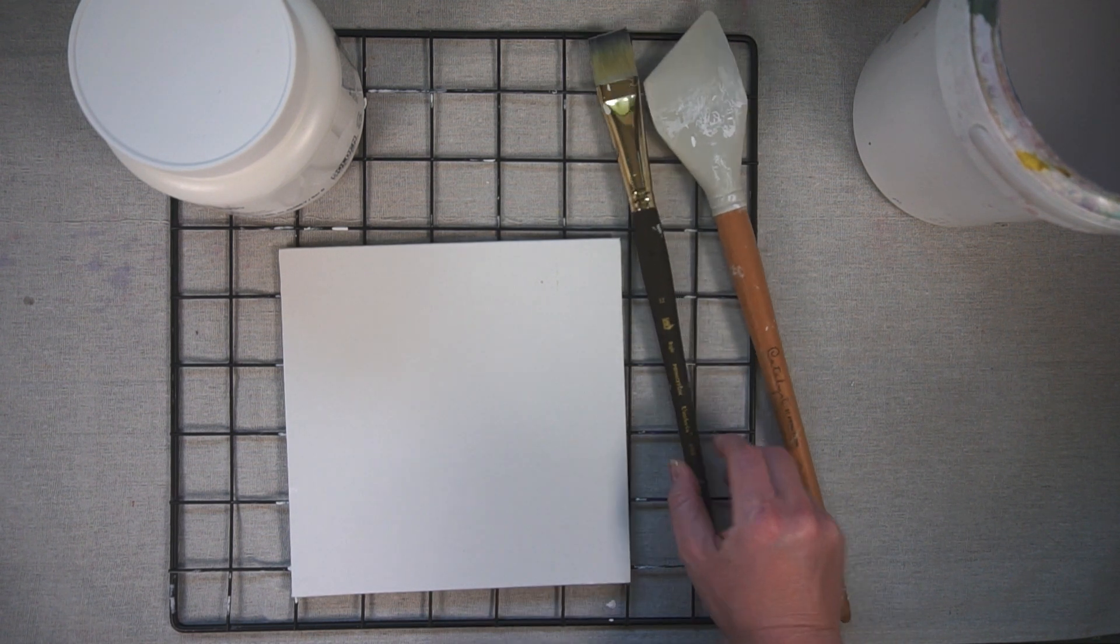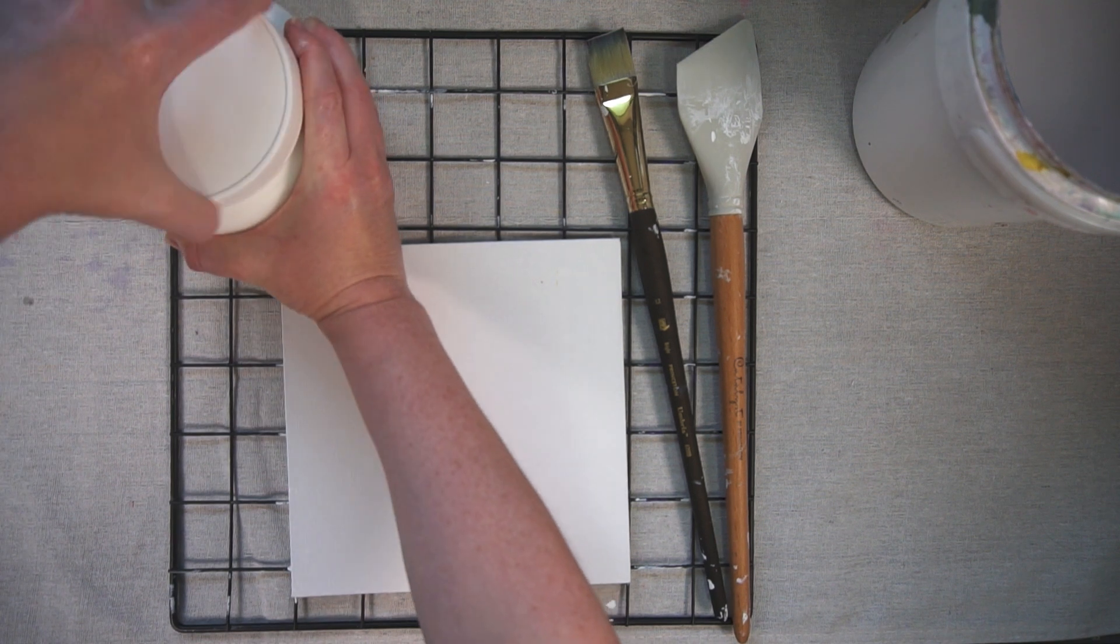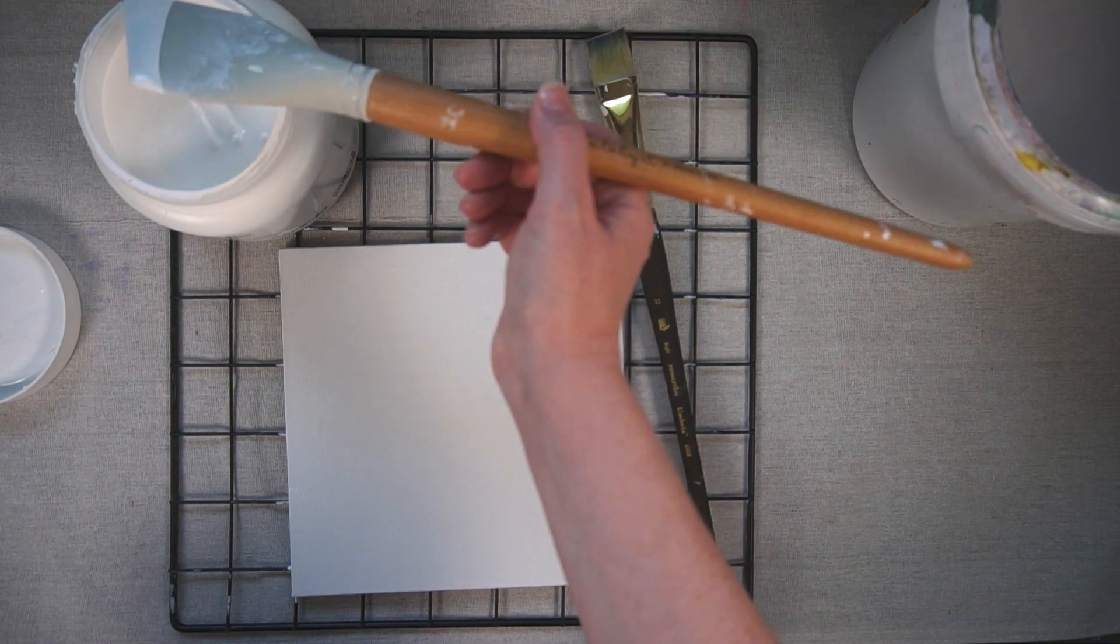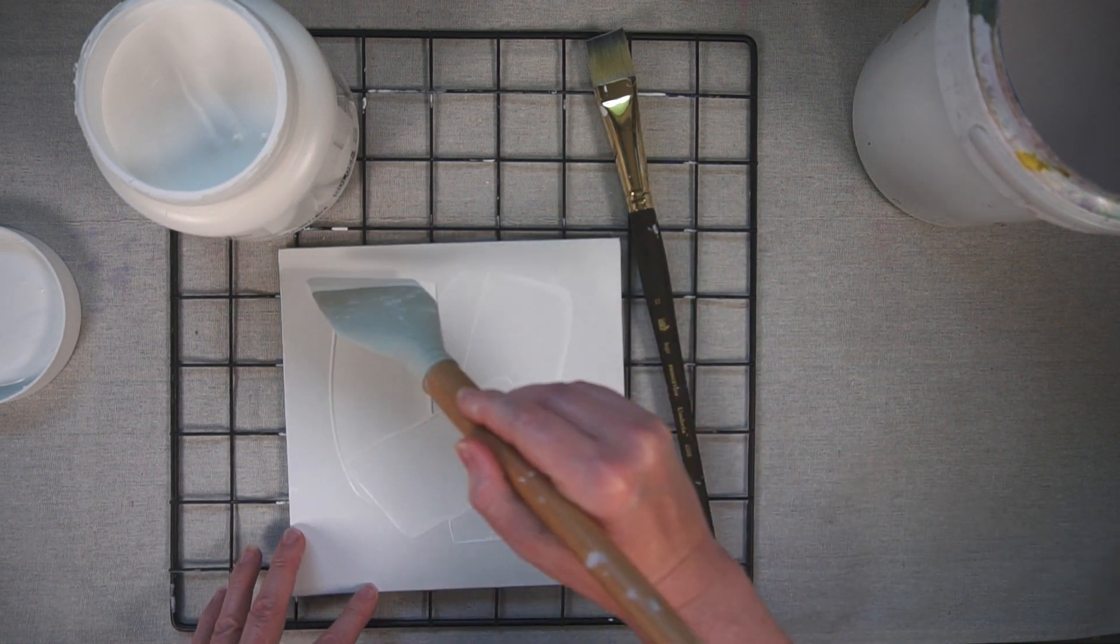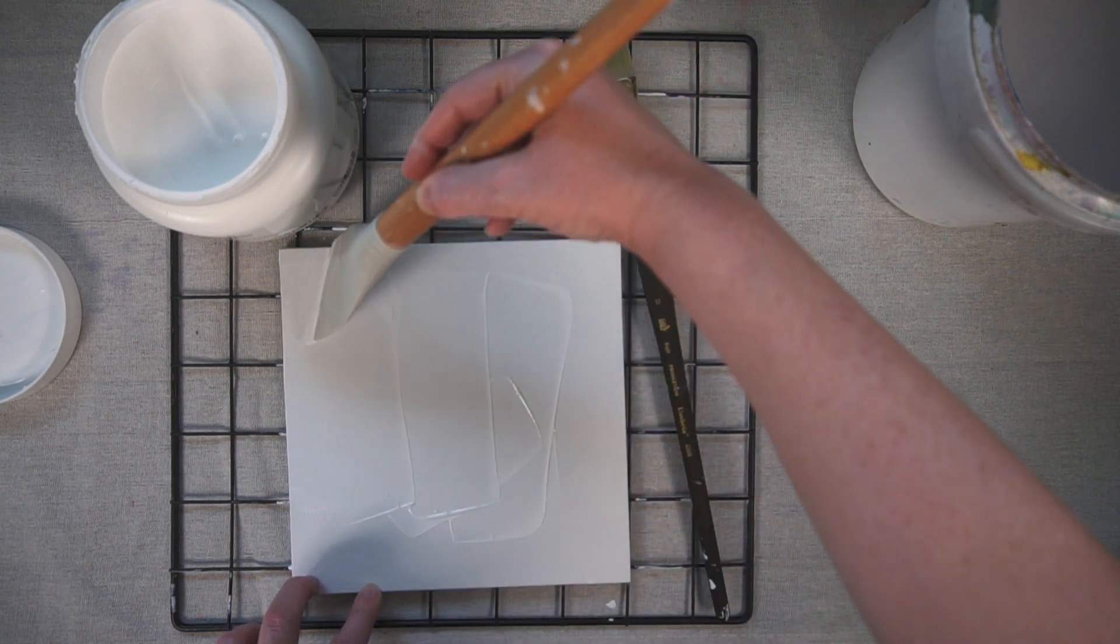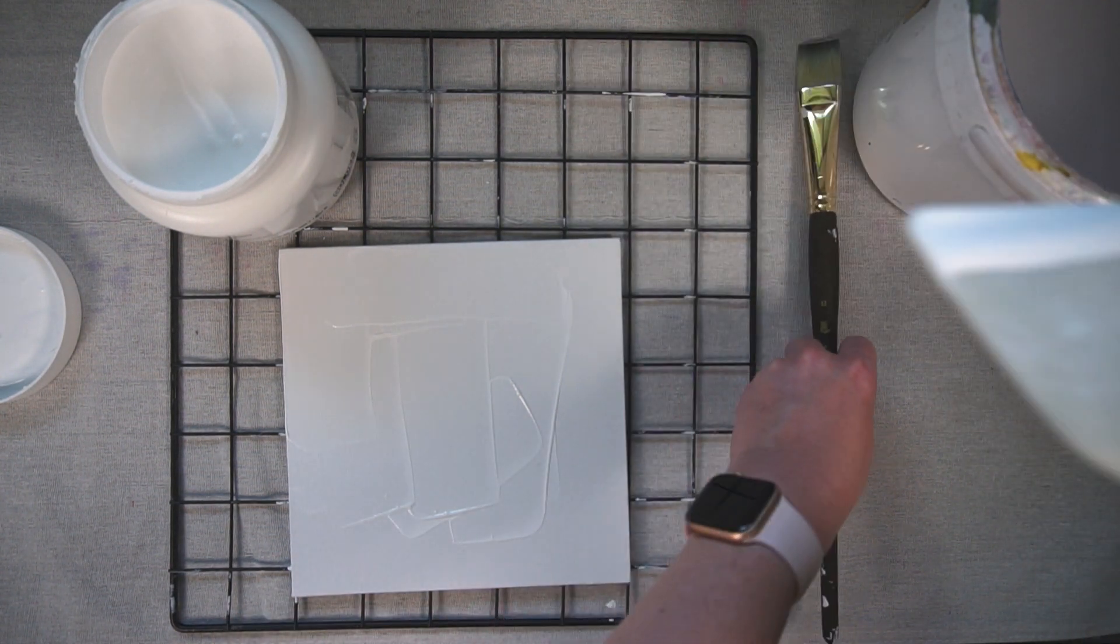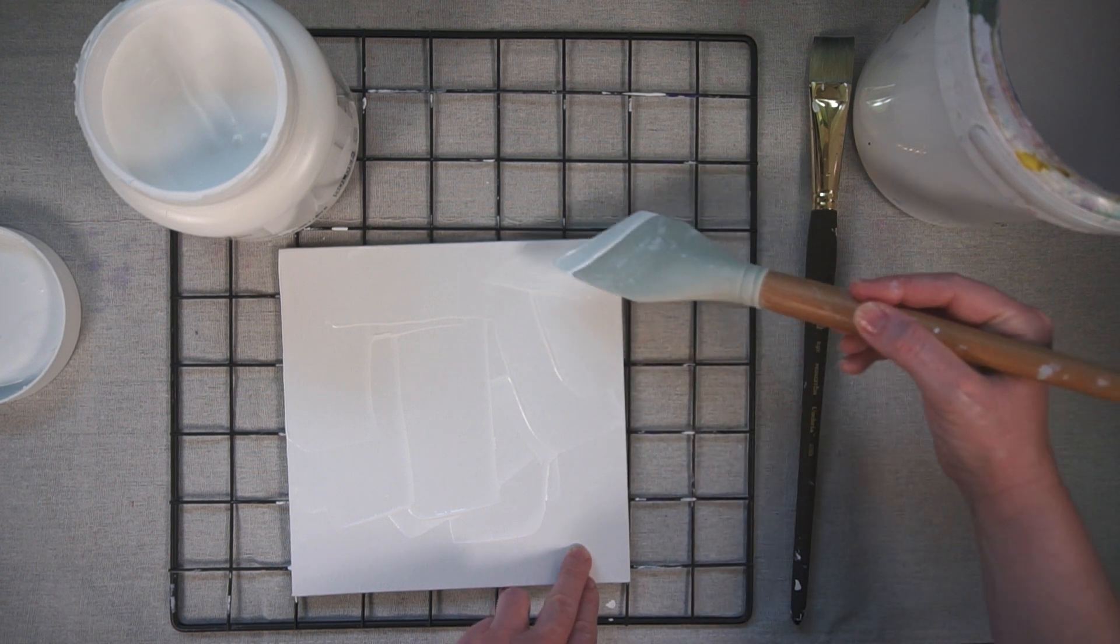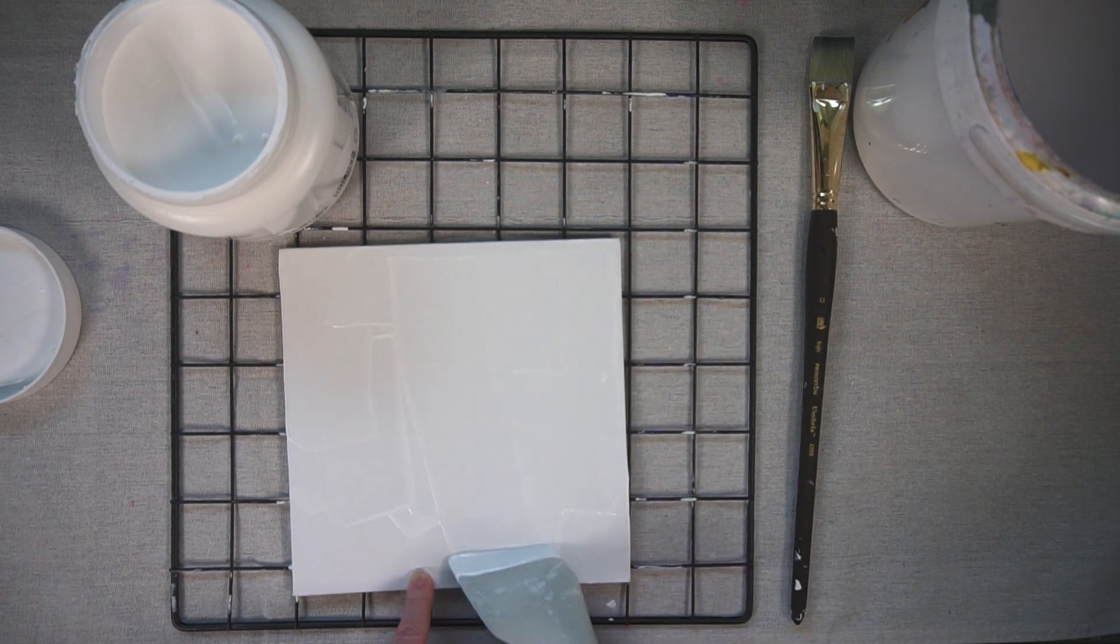Just open up your gesso, take a little bit on your hard sided scraper, and you just scrape it on. Essentially what you're doing is you're kind of filling in that weave, and this is why it usually takes a couple extra coats. First coat would take a little bit longer than your second coat. Essentially you're just making sure that it's applied across the surface, so just scrape it around.